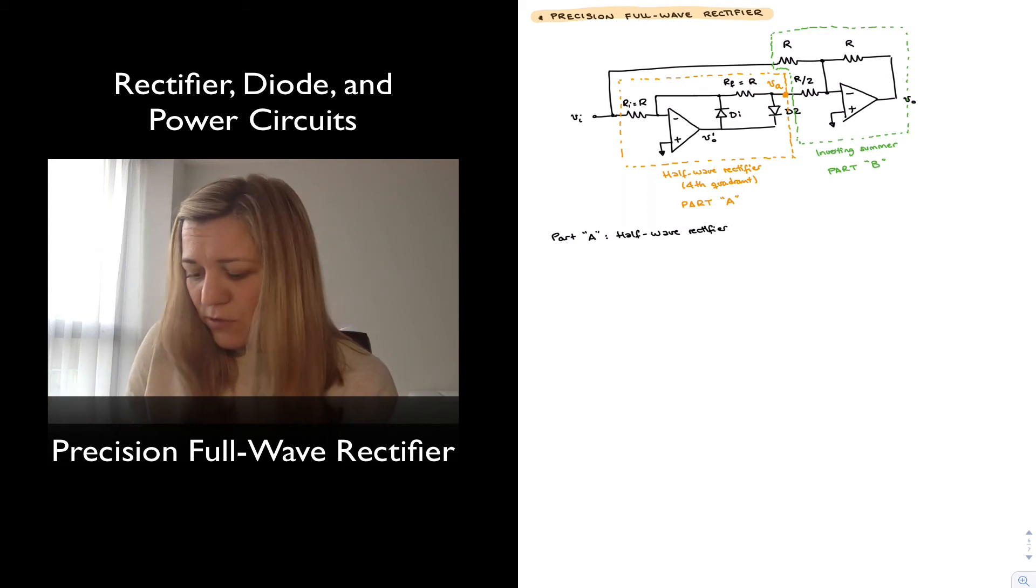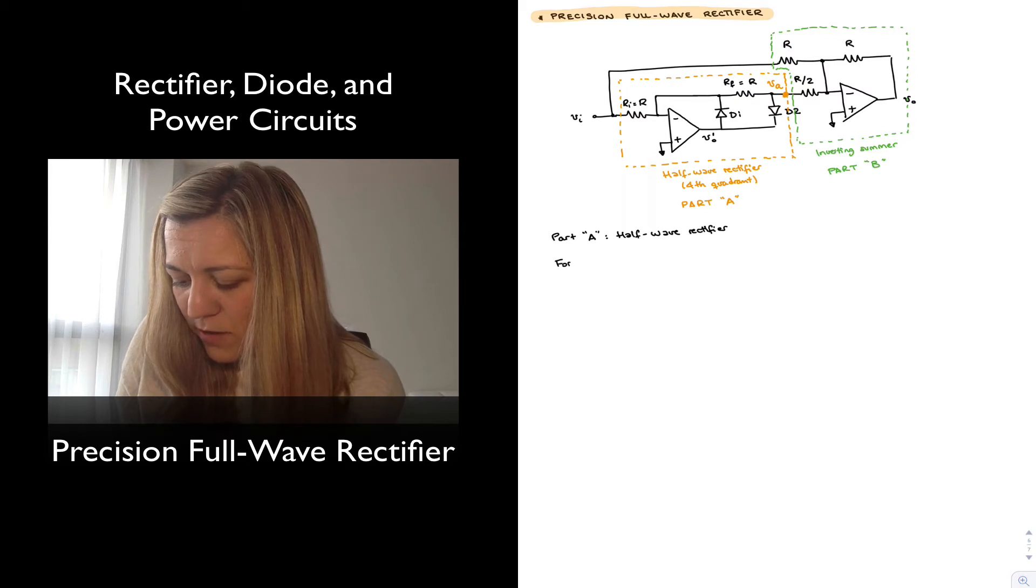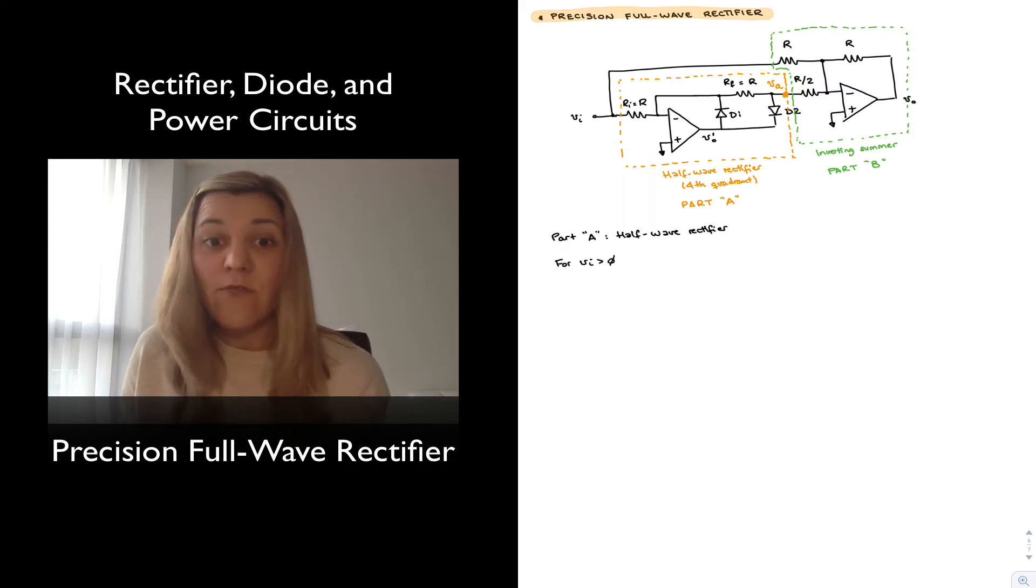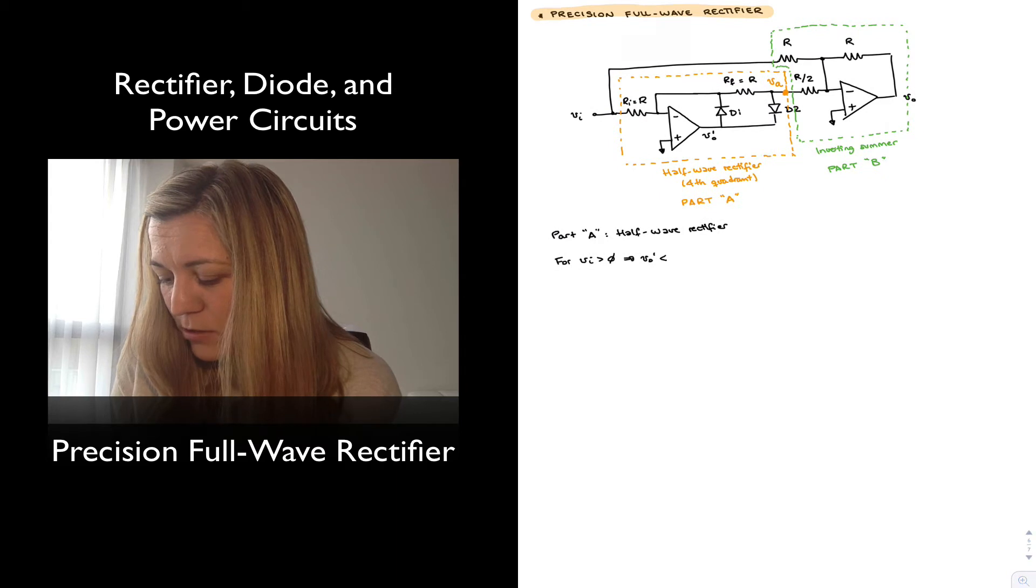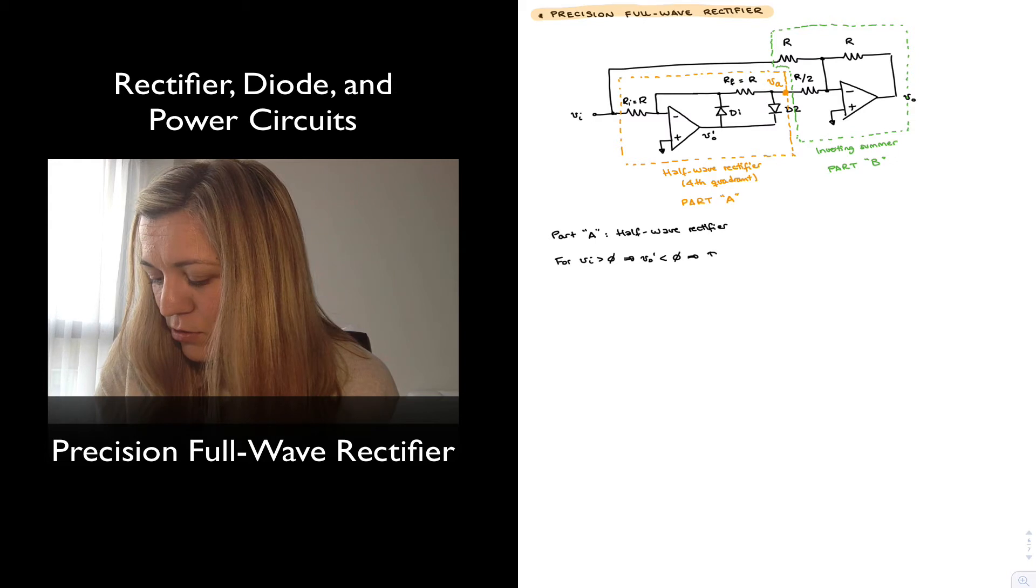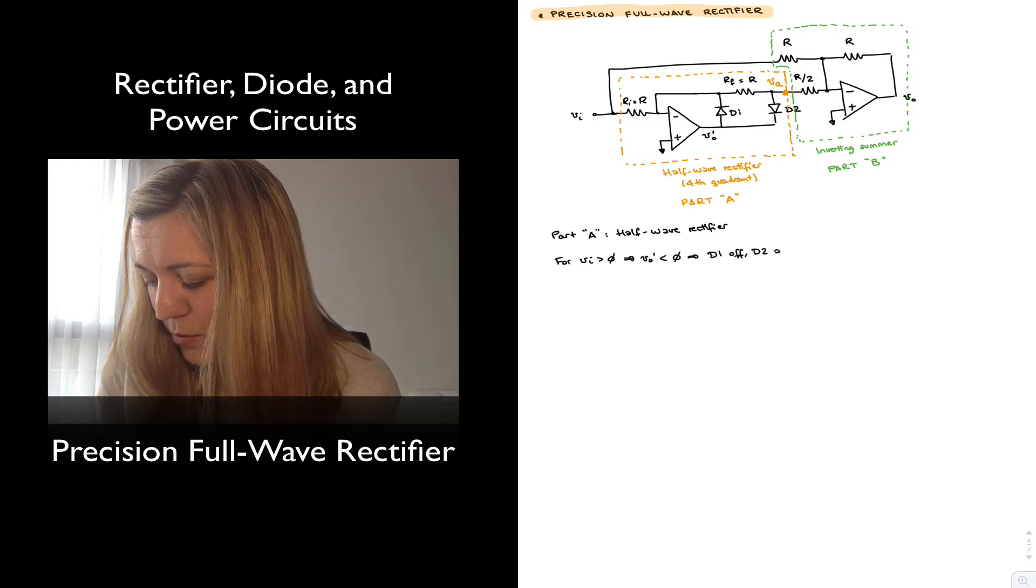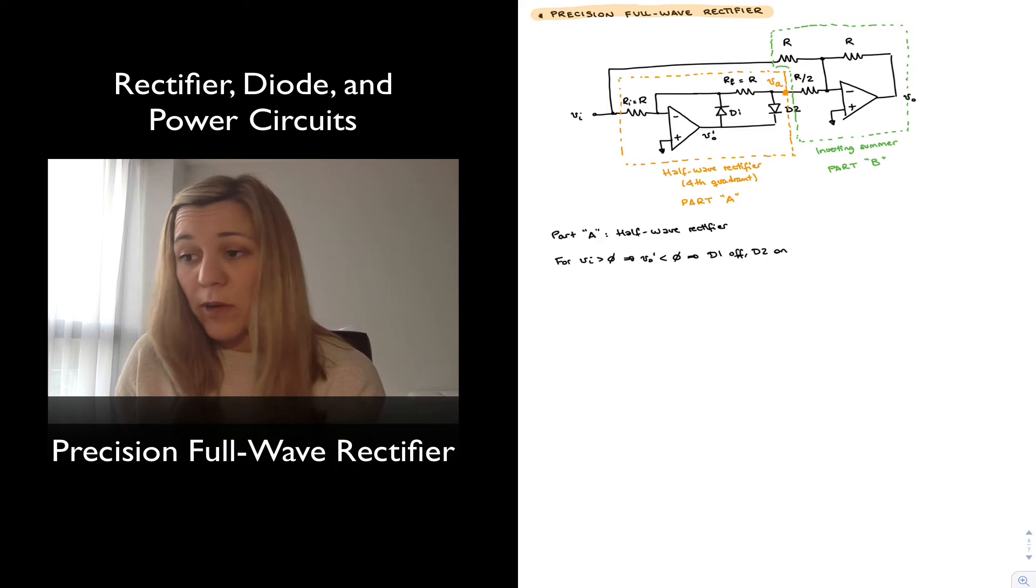So we'll just go fast. If we remember for positive values of the input signal, since the input signal is being applied on the inverting input terminal, the output of that amplifier, Vout prime, is going to try to tend towards negative values. Because of the orientation of the diodes, in that case, D1 is going to be off, D2 is going to be turned on or forward biased.